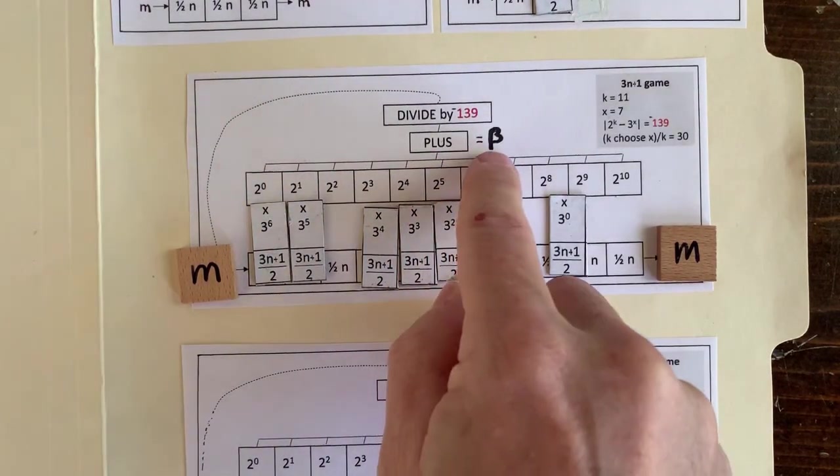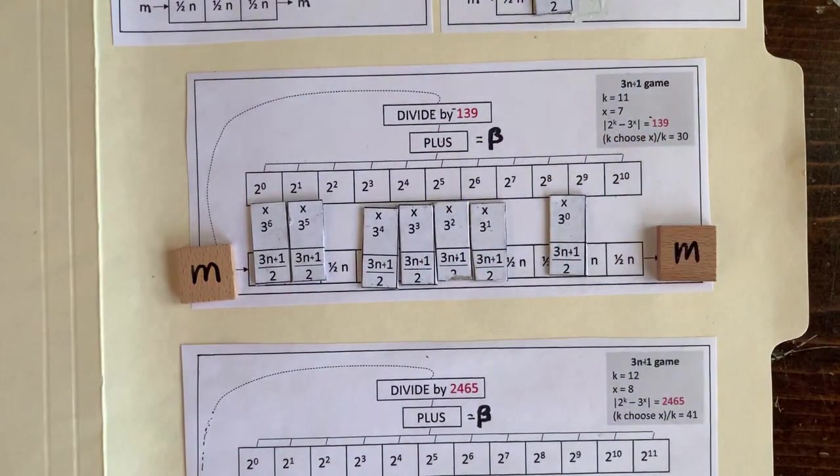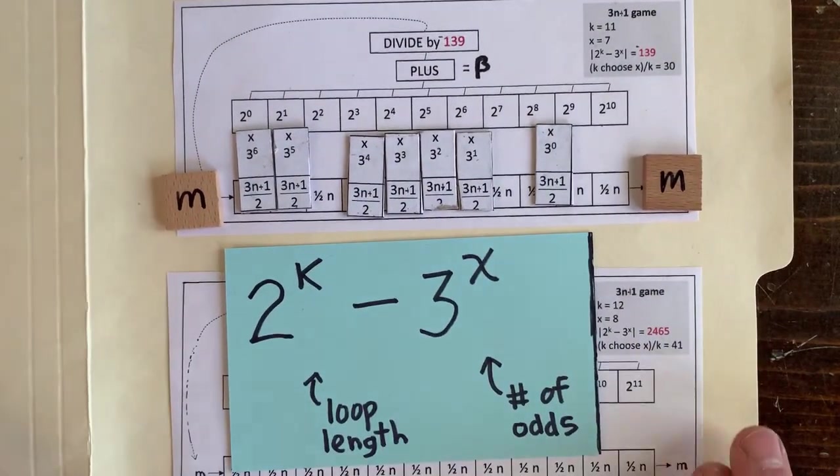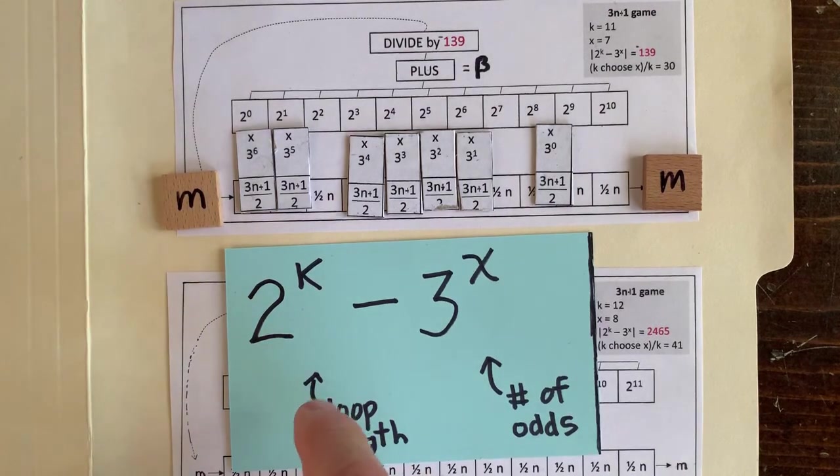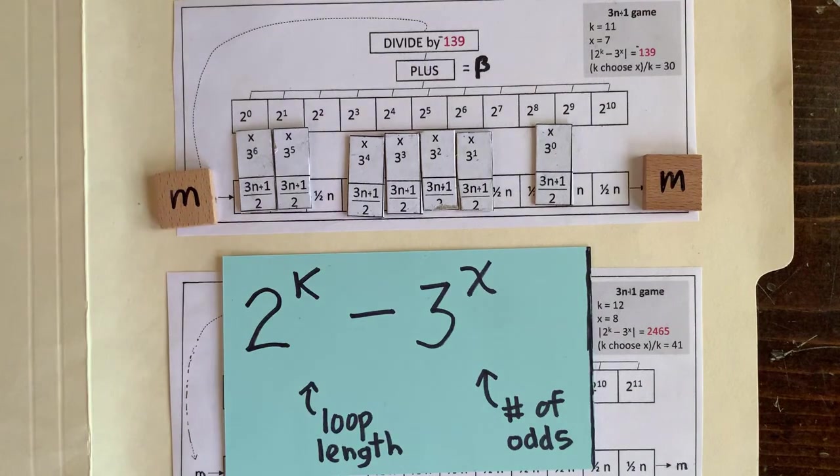To get m, we're going to divide beta by 2 to the k minus 3 to the x, which here is 2 to the 11th minus 3 to the 7th, or negative 139. Trust me, I built this computer very carefully and it operates correctly. Now if beta is divisible by 139, then we've got a valid loop of integers because m is an integer. If it's some fraction instead, then we can move the pieces around and try again.